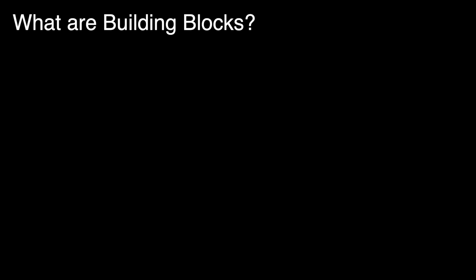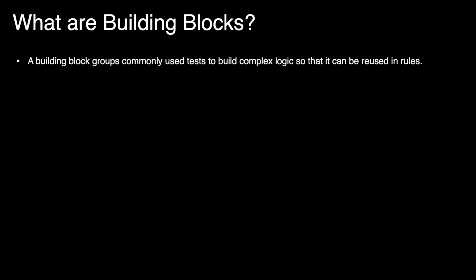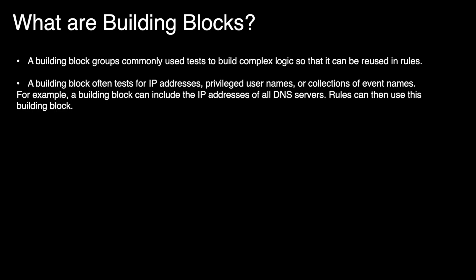Building blocks makes it easier. You can export a set of rule tests as a building block, and these building blocks can then be used while creating rules where the same test conditions are required. A building block groups commonly used tests to build complex logic so that it can be reused in the rules. A building block often tests for IP addresses, privileged usernames, or a collection of event names.